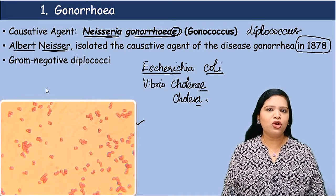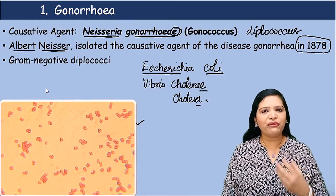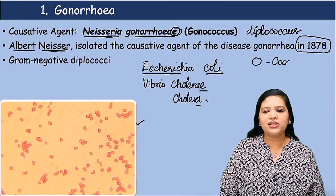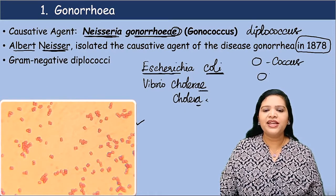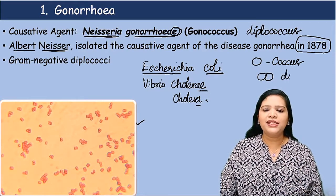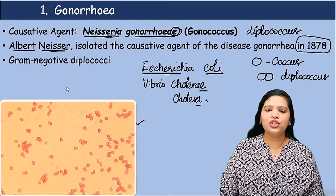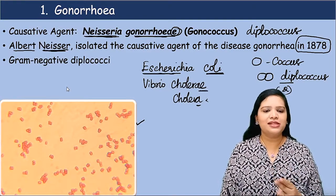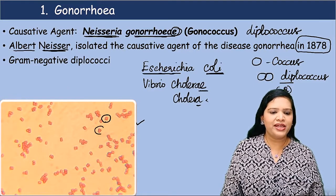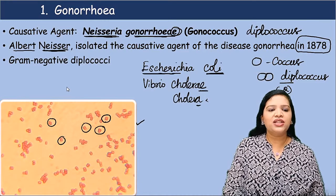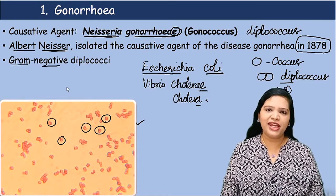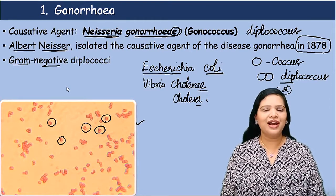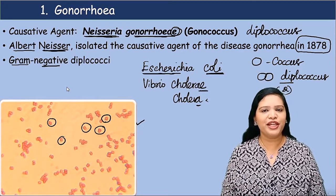Neisseria gonorrhoeae — so what is a diplococci? We know that bacteria have different shapes and arrangements: round shape, rod shape. Round shape bacteria are called coccus. If they are arranged in pairs, it is called diplococcus — di means two. So these bacteria always arrange in doubles. That is why this is called diplococci. In gram staining, they are gram negative bacteria because they take up the safranin, whose color is red. So they appear as gram negative red color diplococci.